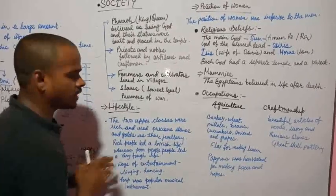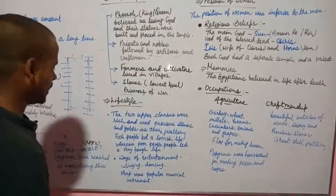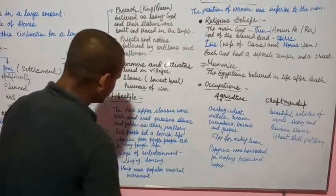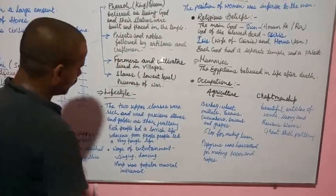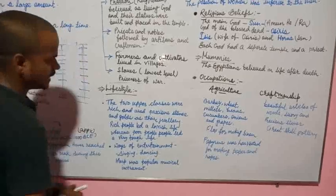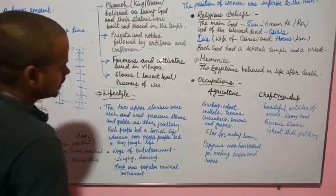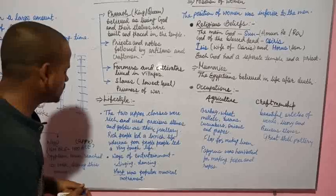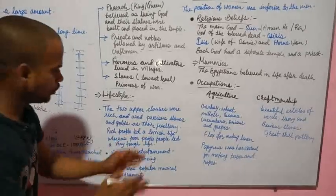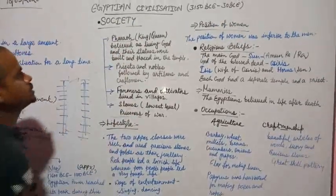Ways of entertainment. They were fond of singing and dancing and harp was the popular musical instrument introduced during this Egyptian civilization.